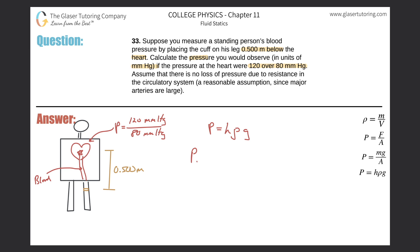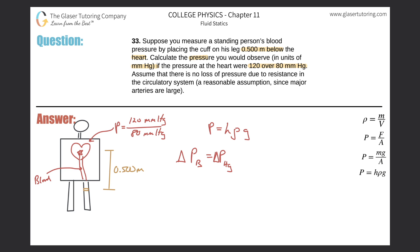The pressure of the blood down here will equal the pressure of mercury. More precisely, the change in pressure of the blood equals the change in pressure of mercury. I'm taking out the heart pressure component — I just want to find the pressure that results from this height differential. So all I'm trying to find is the pressure due to the height.